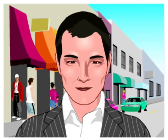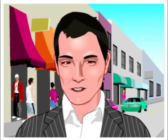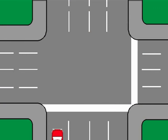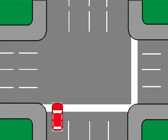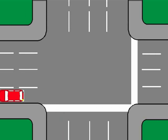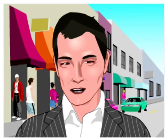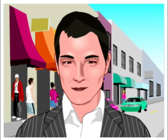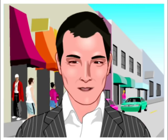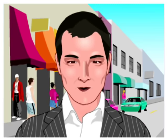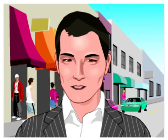Two of nine — left turns from a one-way street to another one-way street. When approaching an intersection, you must signal your intention to make a left turn and move into the lane of the one-way street. Make sure your way is clear. Stop and move into the lane of the one-way street on which you wish to travel.